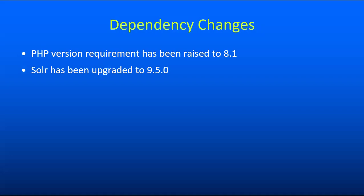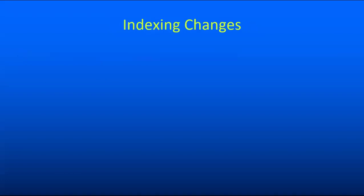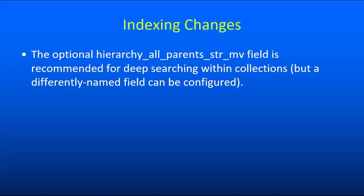Additionally, we've upgraded Solr to version 9.5, just to keep up with developments over there. We strongly recommend that you do a full re-index when you upgrade, just to be sure that all of your data is formatted appropriately for the new version of Solr, but also because we've made some small changes to our Solr index. We have this new deep searching within collections functionality — if you want to take advantage of this, we recommend using a field called hierarchy_all_parents_string multi-value, but it's configurable.